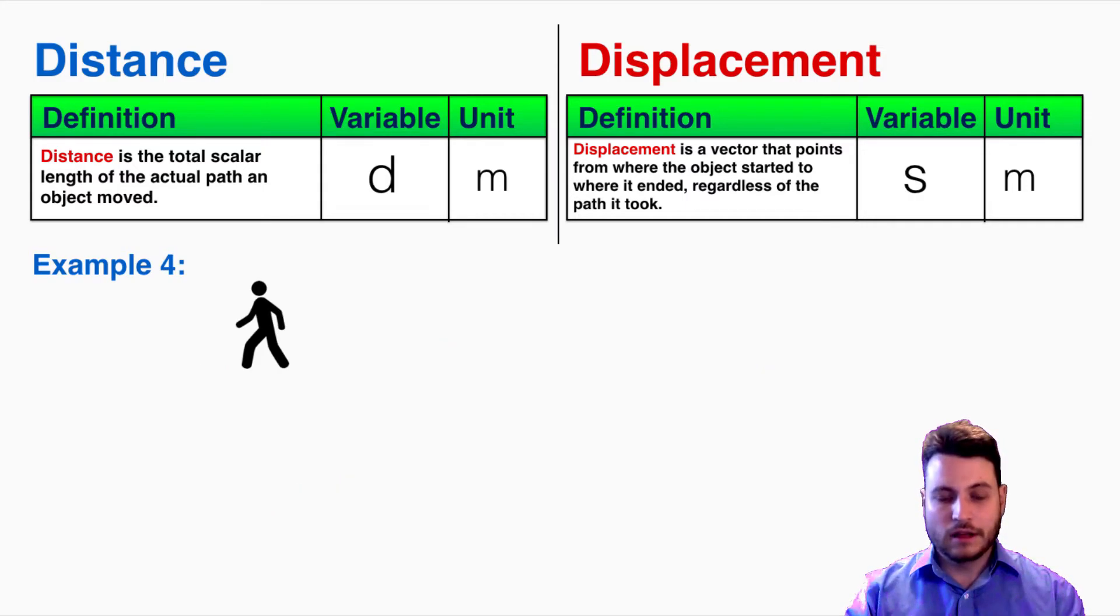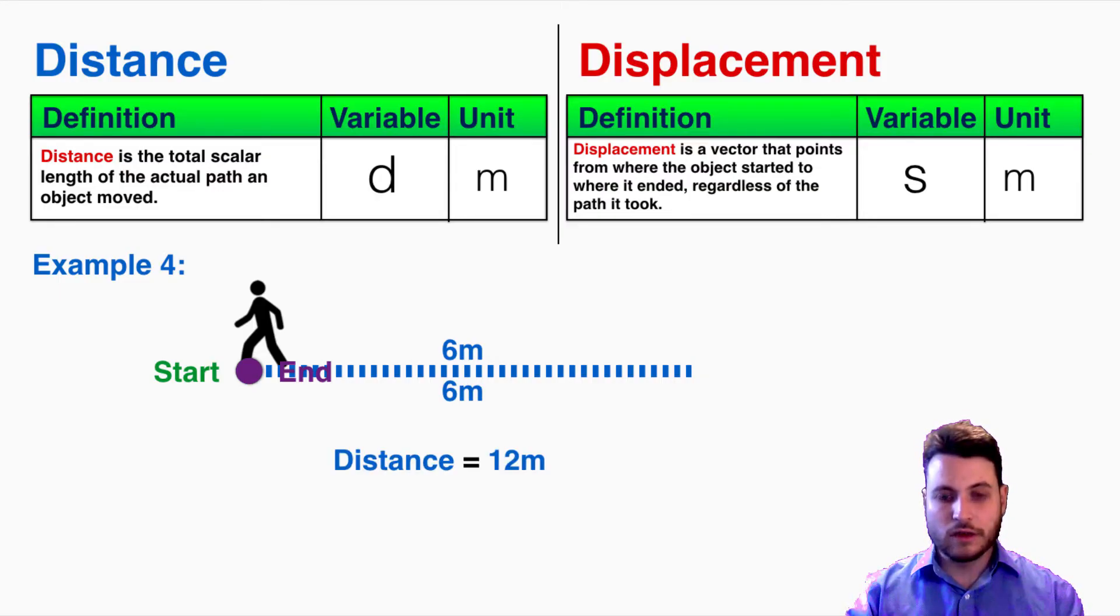One more example. Let's say they move like this. Here they've moved forward 6 and then backward 6 and they ended. Their total distance is 12 meters. If we were to draw a vector from where they started to where they ended, the vector wouldn't have any length because the start and end point are the same. So we would say that the displacement is actually just 0 meters.